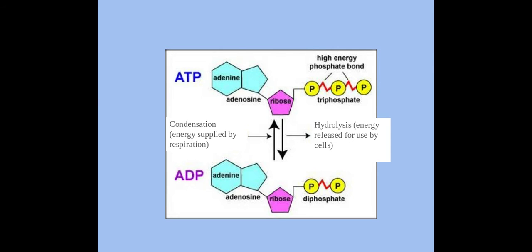Here is another example of how that works visually. You can see here I've hydrolyzed the molecule to get my ADP and I've removed one phosphate group in the hydrolysis reaction. If I was to add it back on, that would be a condensation reaction to create ATP again.